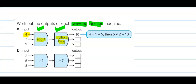Next value is 7. 7 add 1 is 8, and 8 times 2 is 16, so the answer is 16 here. Next is 9. 9 add 1 is 10, and 10 multiplied by 2 is 20, so the answer is 20.